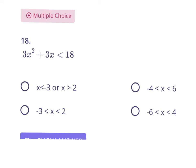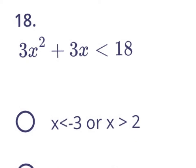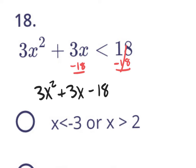Number 18 is a quadratic inequality that we're going to solve, and the first thing to do on a quadratic inequality when solving is to pretend it's a quadratic equation. So if this were a quadratic equation, you would set it equal to 0 and then solve. So we're going to subtract 18 and rewrite this thing. It says 3x squared plus 3x minus 18 is less than 0, but we're pretending it's an equal sign, so we're just going to write it as an equal sign for now.